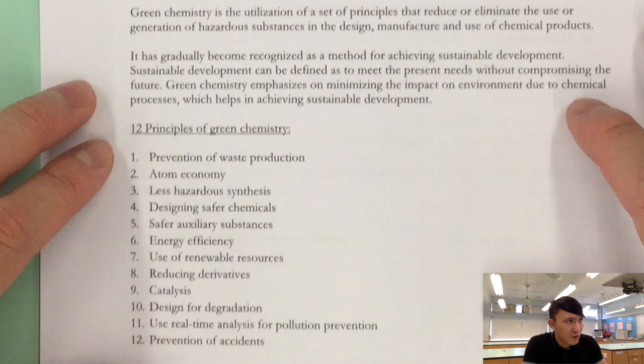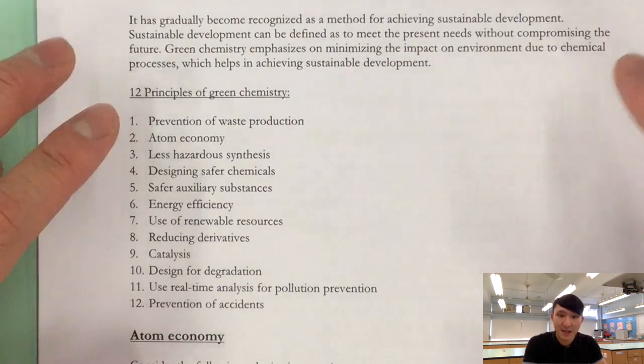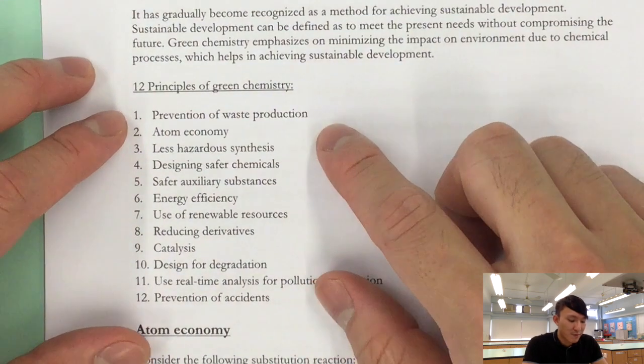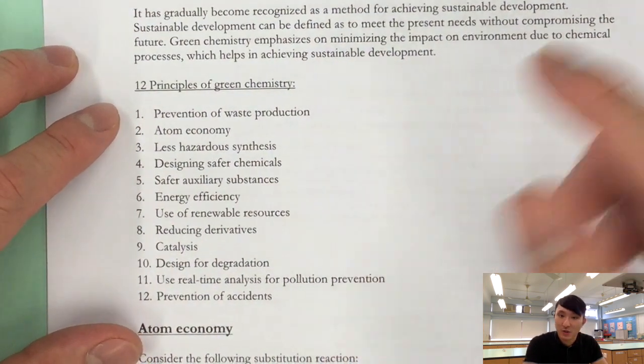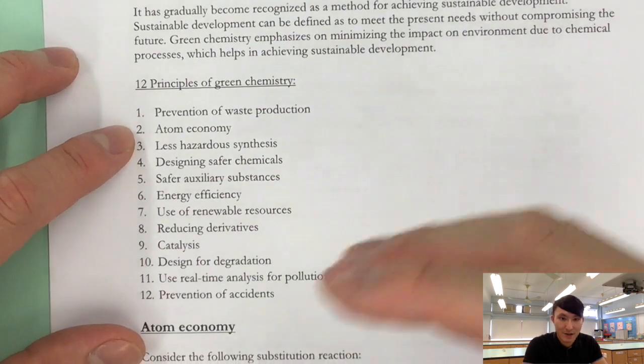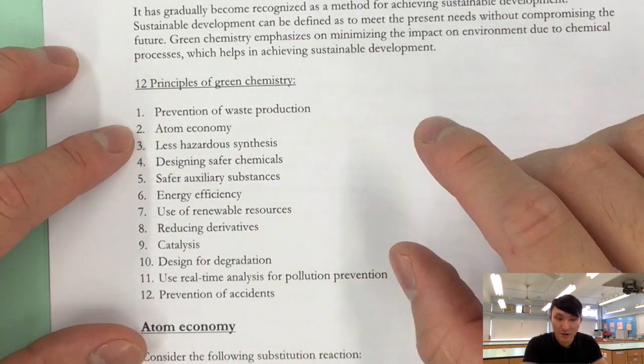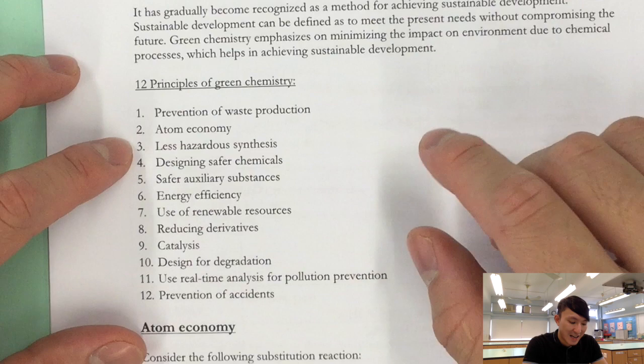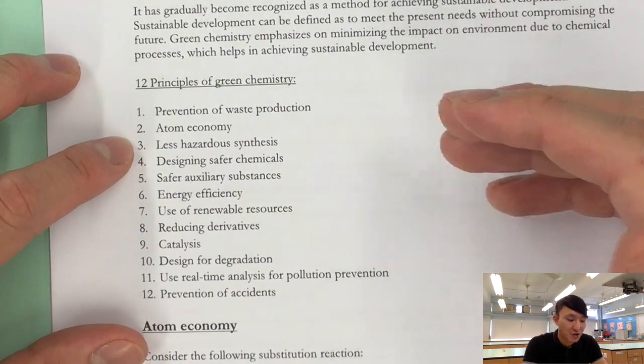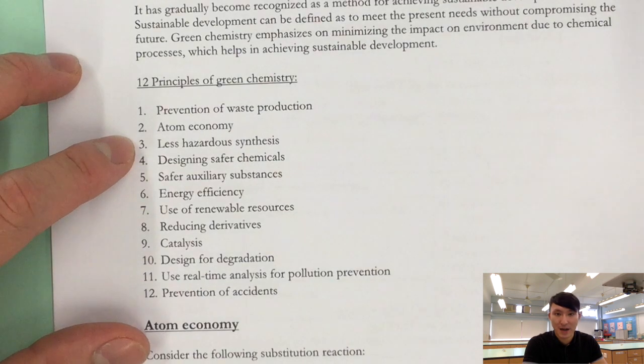Now there are 12 principles of green chemistry so let me talk about it. First of all, prevention of waste production—this one should be obvious. The second one, atom economy, I will talk about it after I go through all 12 principles. Third one, less hazardous synthesis, basically reduce the use of dangerous reaction pathways.